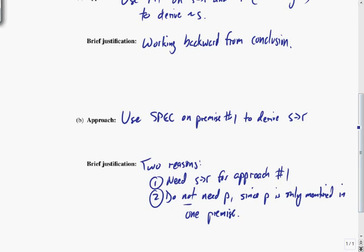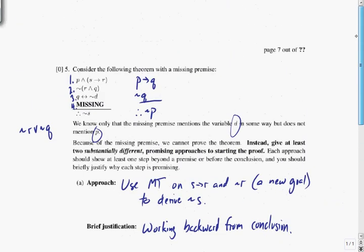So these both feel like promising approaches. I certainly think, depending on the missing premise, they're very likely to be part of any proof that I write for this theorem. Let's see if there's any others. We only need two, and I'm pretty satisfied by these two. But what else could we do?